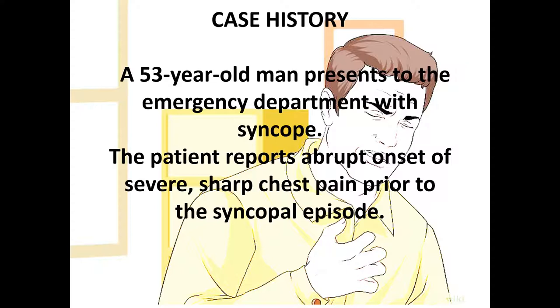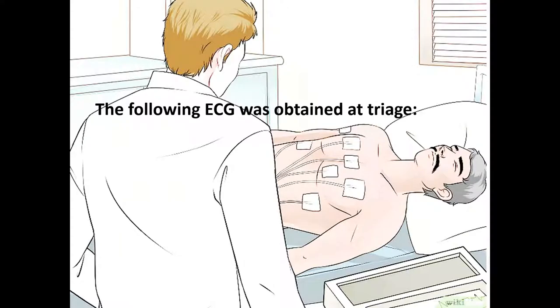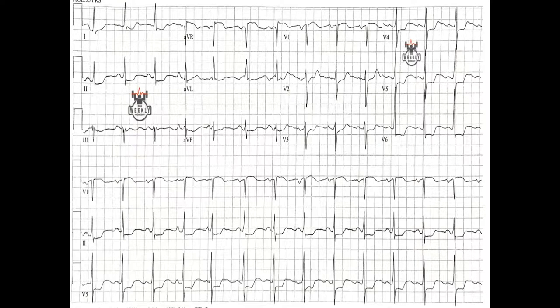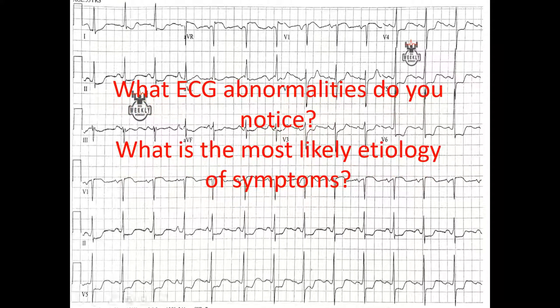This is a 53-year-old man who presented to the emergency department with syncope. The patient reported abrupt onset of severe sharp chest pain prior to the syncopal episode. We did an ECG, which showed ST-segment depression in lead 1 and aVL and in the inferior leads. We also had ST-segment elevation in V1 and diffuse ST-segment depression in all precordial leads.